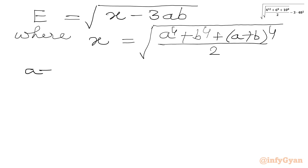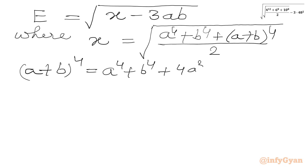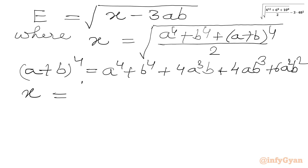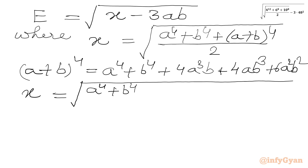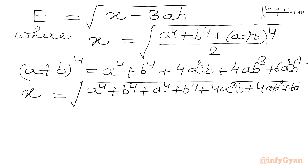We will use the binomial expansion for (a+b) to the power 4, which is: a⁴ plus b⁴ plus 4a³b plus 4ab³ plus 6a²b². So we get x equal to the square root of: (a⁴ plus b⁴ plus a⁴ plus b⁴ plus 4a³b plus 4ab³ plus 6a²b²) over 2.